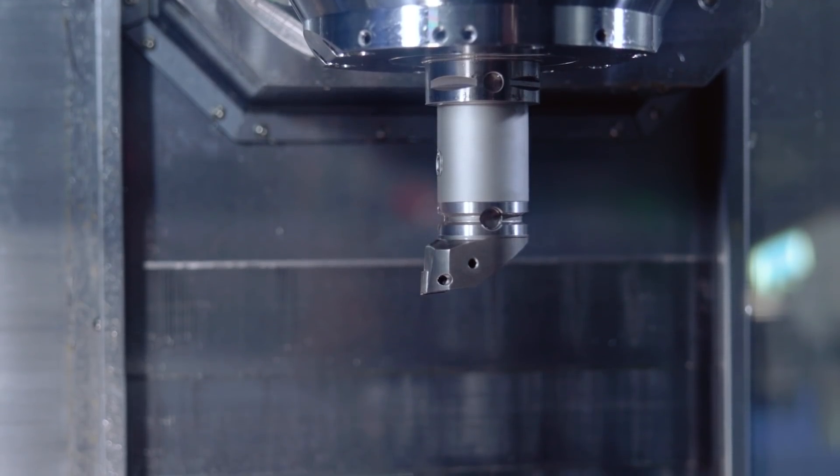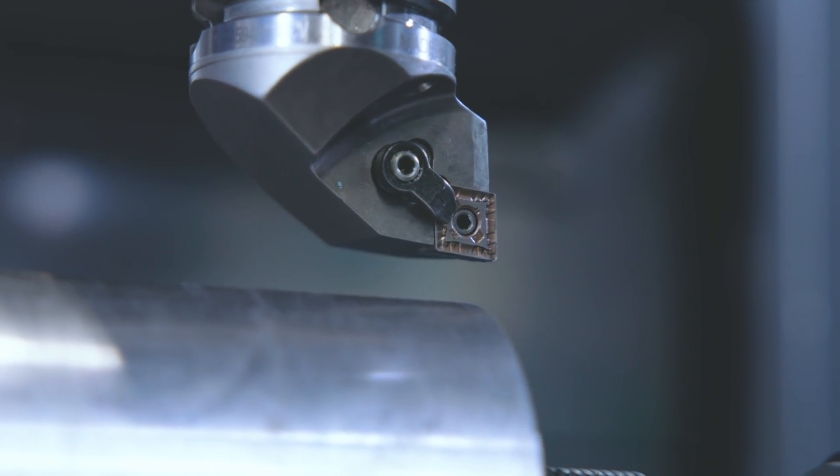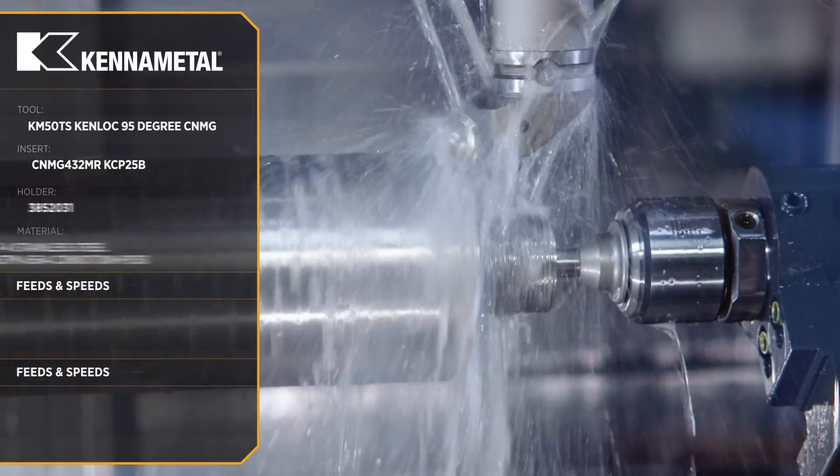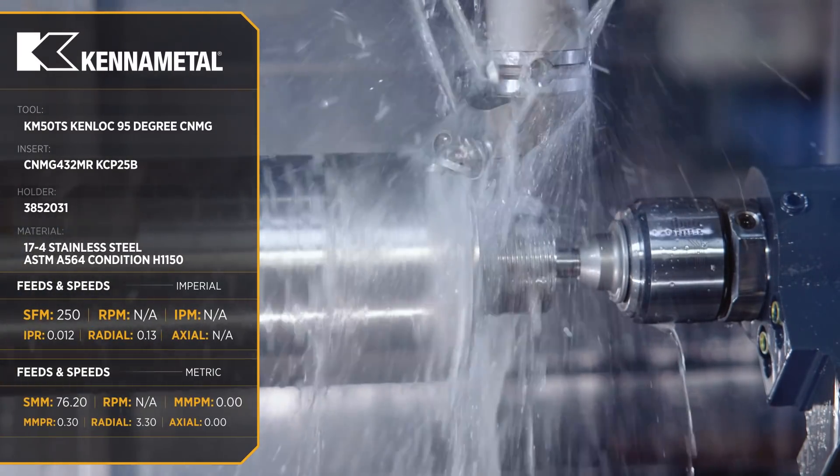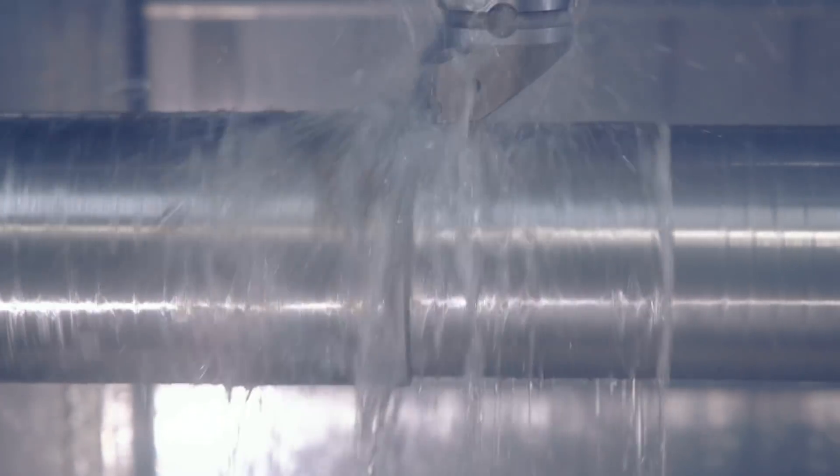The first tool up is the same OD rougher we used in the last operation, the CNMG 432. I'm running it at 250 SFM with a feed rate of 12 thousandths per revolution and a depth of cut of 130 thousandths.